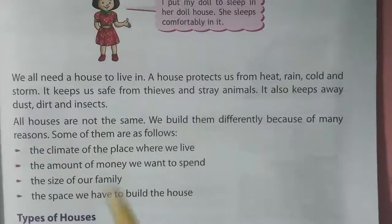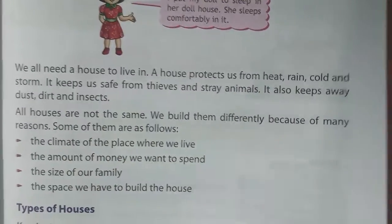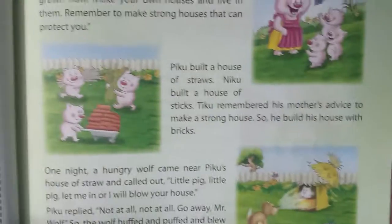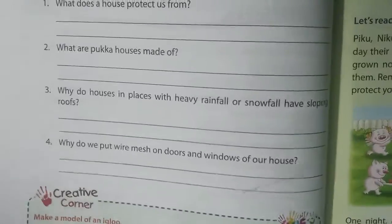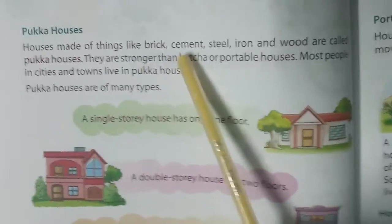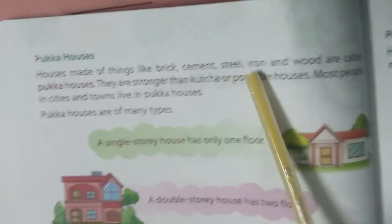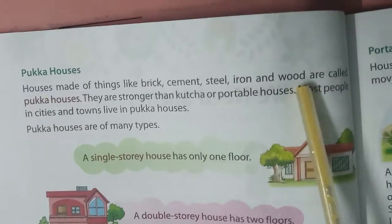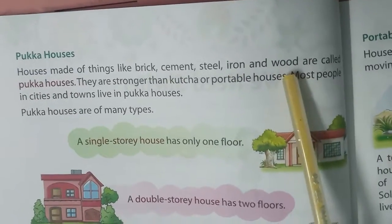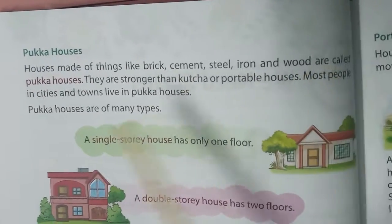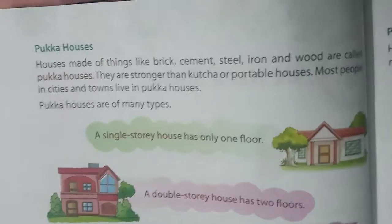Question 2: What are pakka houses made of? Houses made from things like brick, cement, steel, iron, and wood are called pakka houses.